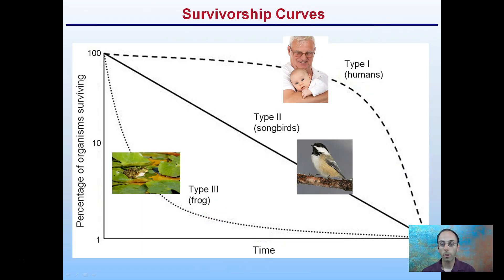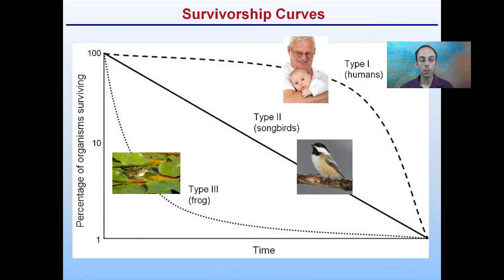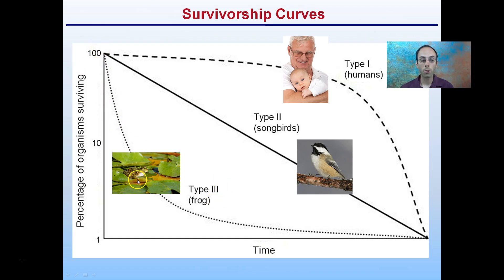Looking at this graphically: type 1, humans, shows the death rate increasing later in life — further in time is when you're more likely to die. Songbirds show a pretty consistent year-to-year decline. And frogs, in this example, have many dying very early in life, but once established, those few individuals that survive to the midpoint will largely survive until the end — that steep early drop-off is type 3.